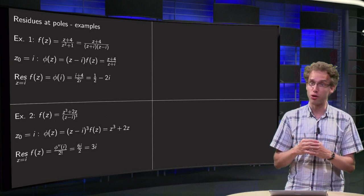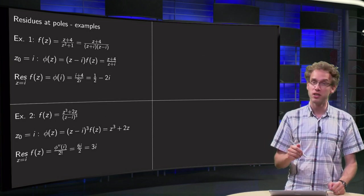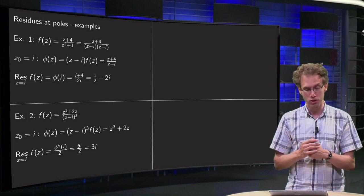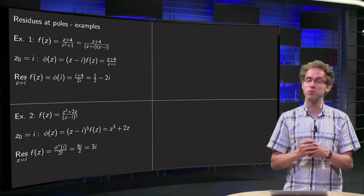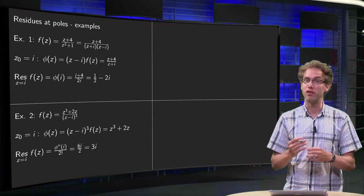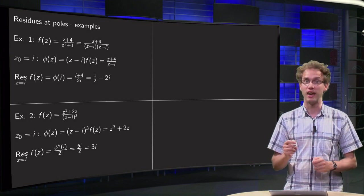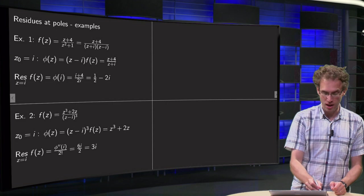Let us go on with a higher order pole. What happens in that case? Our second function will be z cube plus 2z over z minus i cubed. And we see by inspection that we have a pole of order 3 at z equals i.